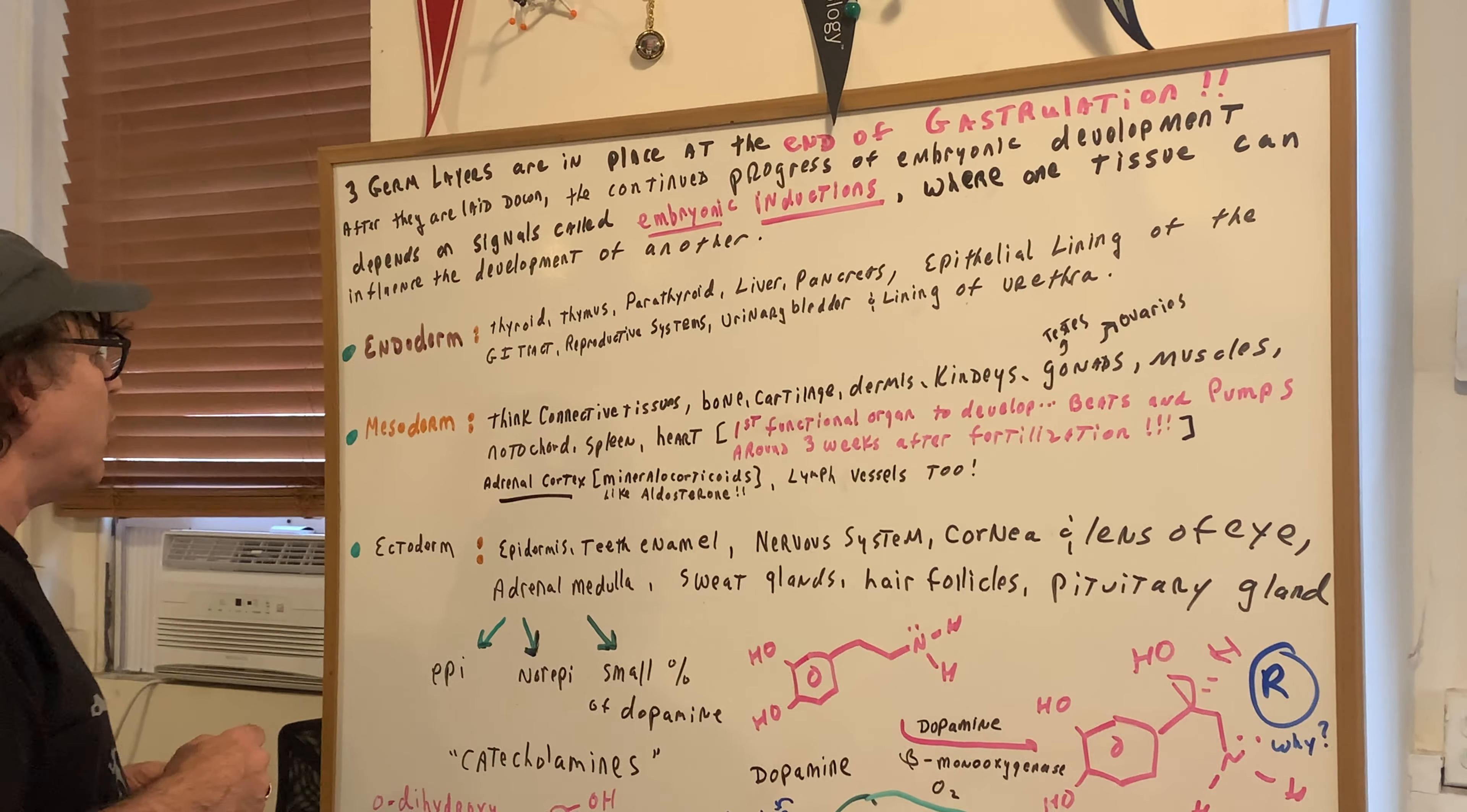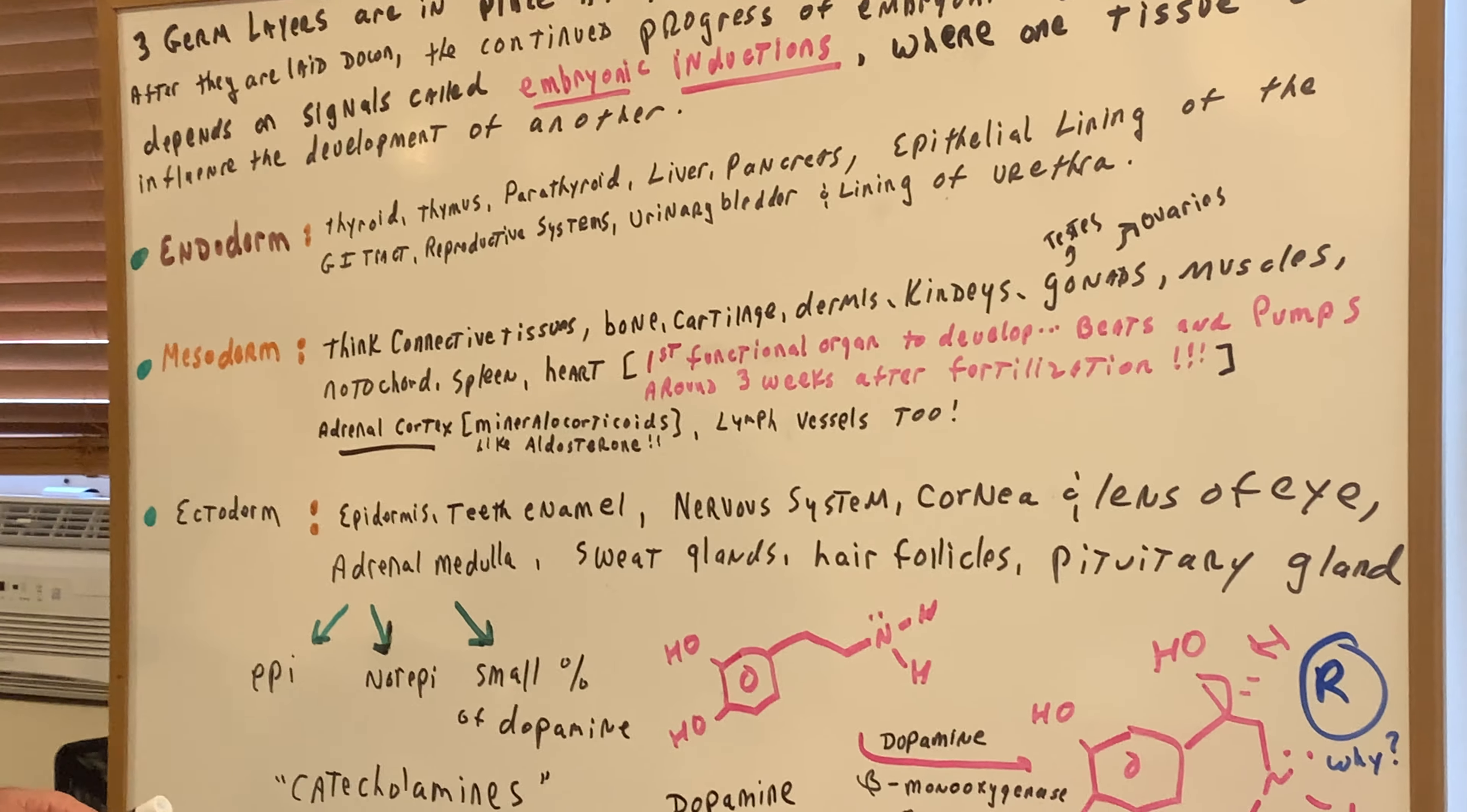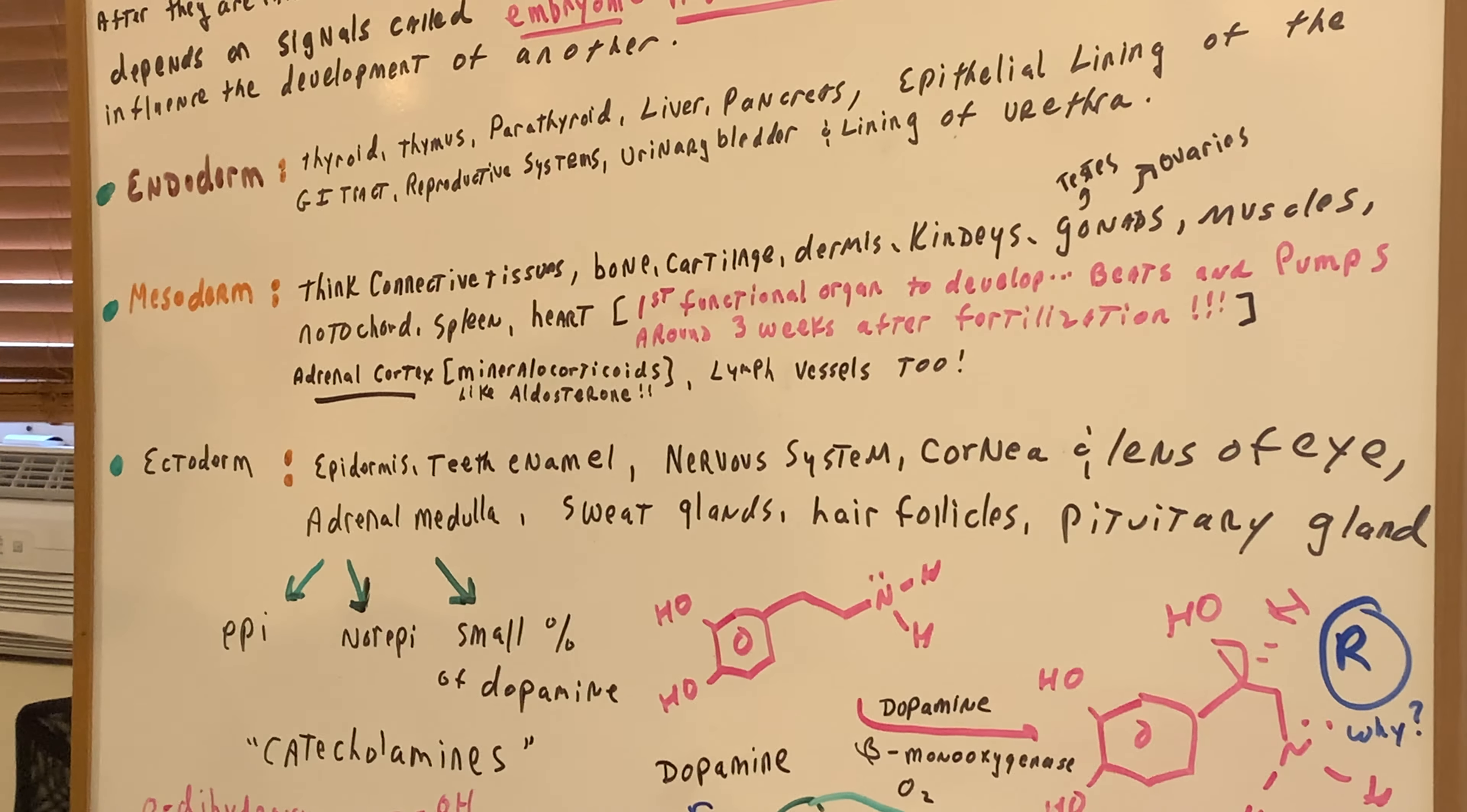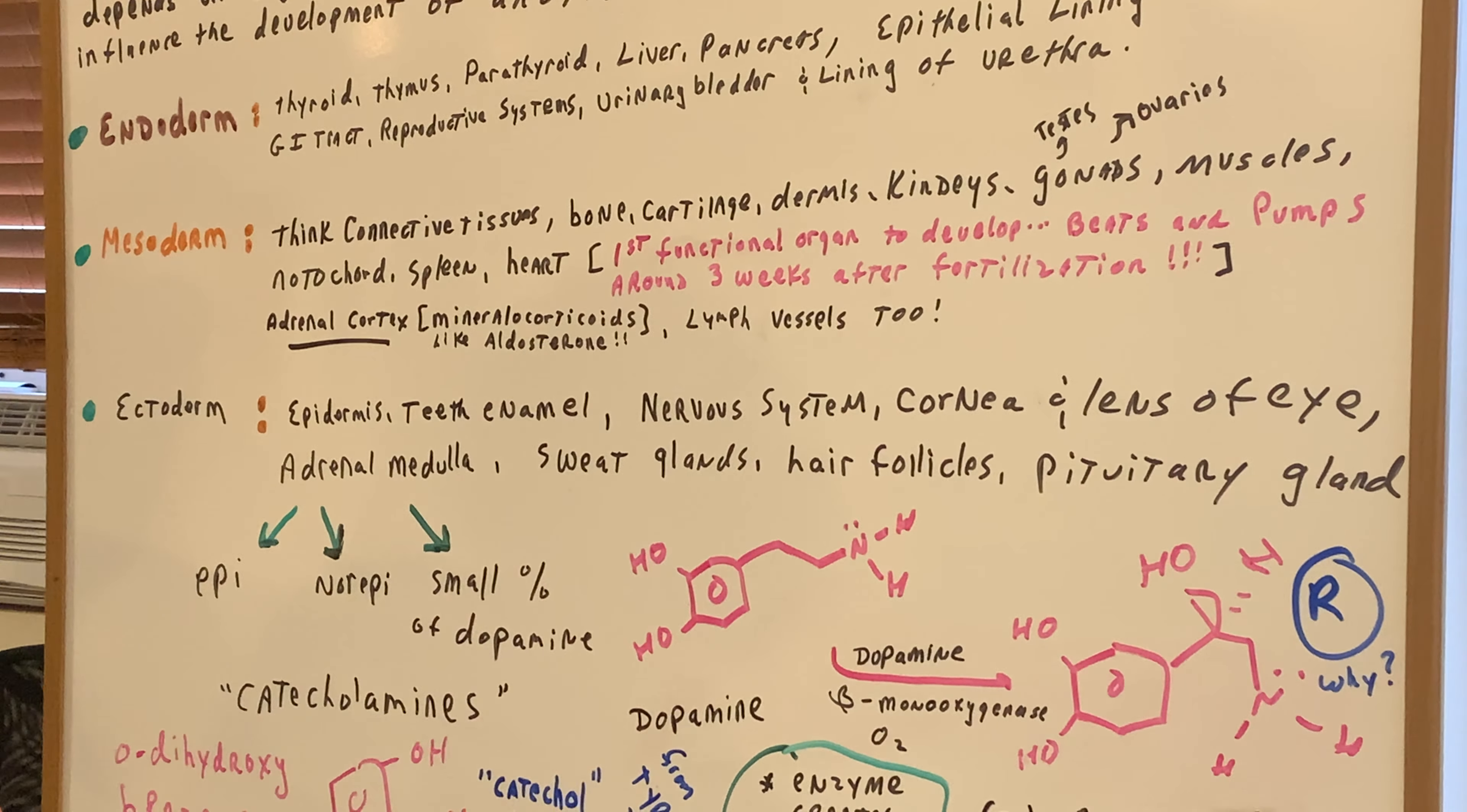Lymph vessels are also mesoderm-derived. Then the ectoderm, that was the epidermis, the enamel of the teeth, nervous system, cornea and lens of the eye, the adrenal medulla, sweat glands, hair follicles, and pituitary gland.